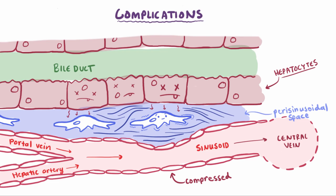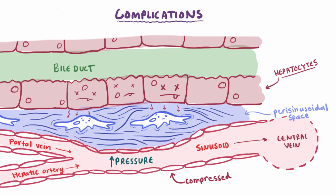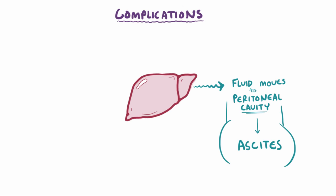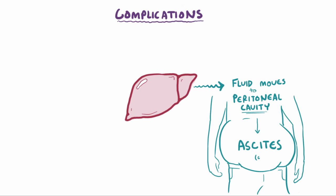As those central veins and sinusoids become compressed and push on the fluid inside, their pressure starts to build up, leading to intra-sinusoidal — or sometimes called portal — hypertension, which is this higher pressure in the portal veins. Higher portal vein pressure means that fluid in the blood vessels is more likely to get pushed into tissues and across tissues into large open spaces, like the peritoneal cavity. That's why cirrhosis leads to excess peritoneal fluid, a condition called ascites.